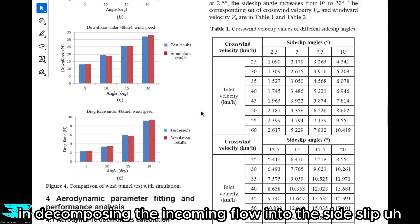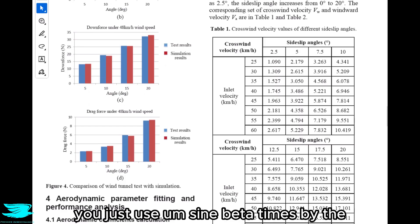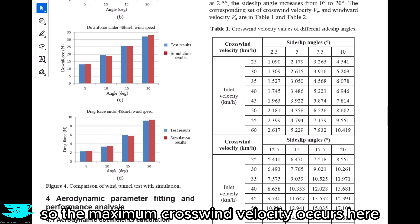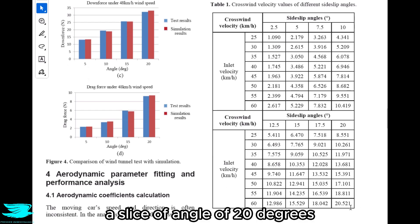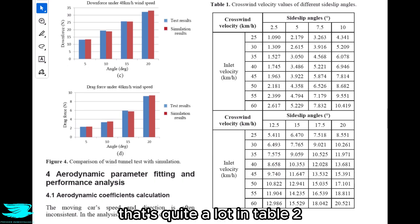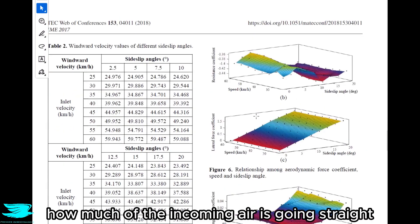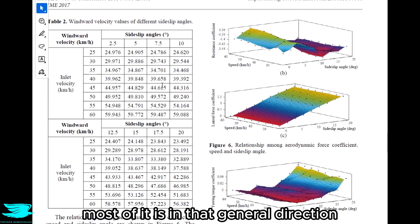The maximum crosswind velocity occurs here in the bottom right. So at an inlet velocity of 60 kph, the side-slip angle of 20 degrees gives us a crosswind velocity of 20.5 kph. That's quite a lot. In table 2 we see the windward velocity. So effectively, how much of the incoming air is going straight? And as you'd expect, most of it is in that general direction.